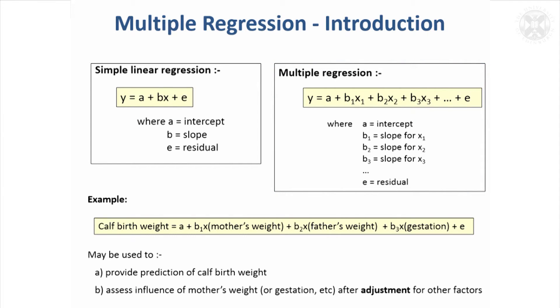For example, you might be in a situation where you've measured calf birth weight and you know the mother's weight, the father's weight, the gestation of the calf. This would be a multiple regression equation trying to predict calf birth weight from those factors. That might be quite useful because it might help you predict in the future how heavy calves of certain parents are going to be based on multiple measurements.